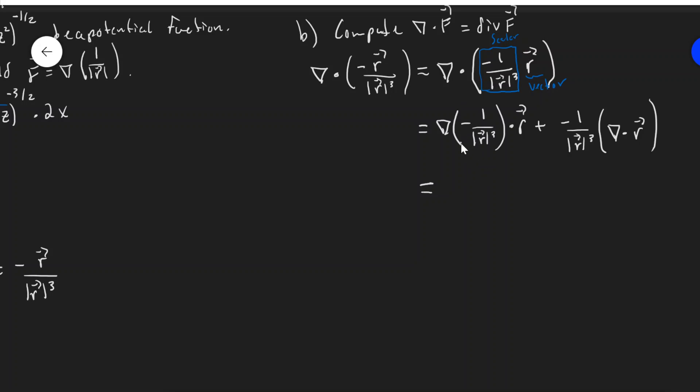What we get out of this is minus 3 magnitude R over magnitude R to the fifth is what this guy is, dot R, plus, I still have, why don't I change this to a negative here? Minus one over magnitude R cubed times del dot R.